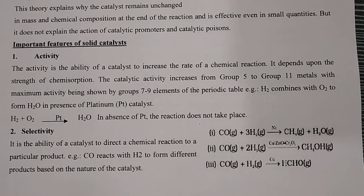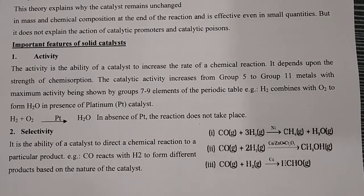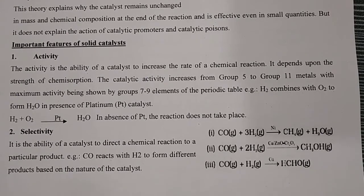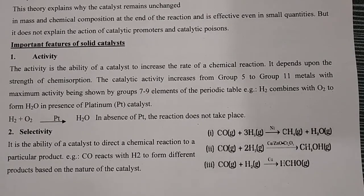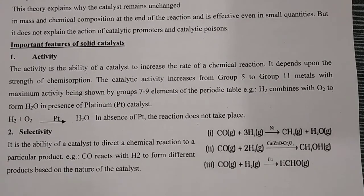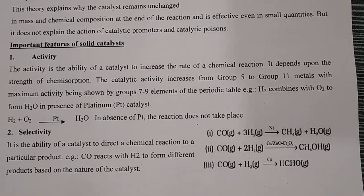The second part is selectivity, which is really very important. You have to select the right catalyst to get the appropriate product. For example, in the Haber process you can't replace iron with platinum and expect the same product, and in the Contact process for H2SO4 manufacturing you can't use iron instead of the specific catalyst.